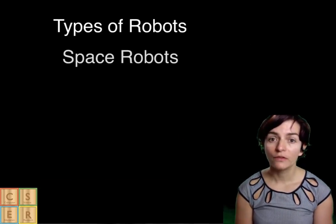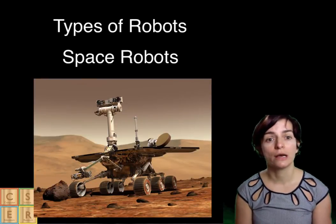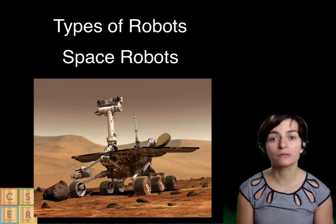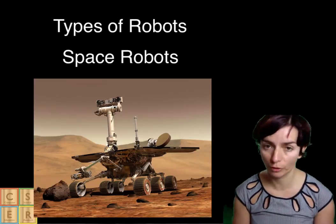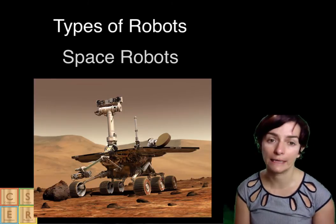Space robots. This type would include robots used in the International Space Station, Canadarm that was used in the shuttles, as well as all the Mars rovers that are basically plowing through the surface of Mars and collecting data.